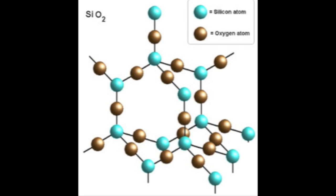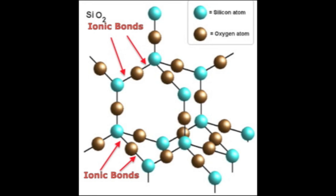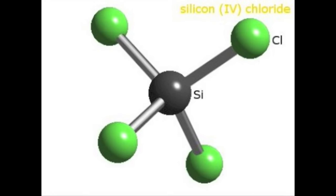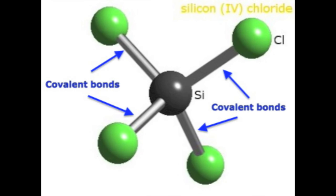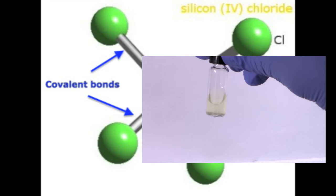In the case of silicon dioxide, also known as sand, silicon acts as a metal and forms ionic bonds with oxygen. However, in the case of silicon tetrachloride, silicon acts as a non-metal by forming covalent bonds with chlorine. These covalent bonds are what makes silicon tetrachloride a liquid at room temperature.